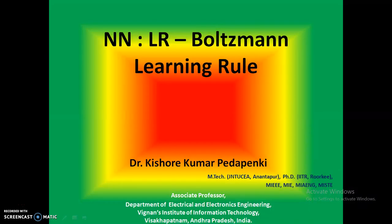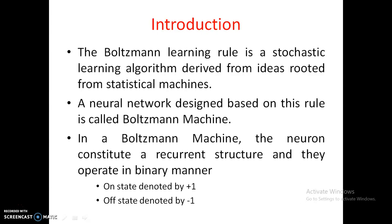In this lecture, let us discuss the Boltzmann learning rule, which is the last of the five learning rules. The Boltzmann learning rule is a stochastic learning algorithm derived from ideas from statistical machines. A neural network designed based on this rule is called a Boltzmann machine.